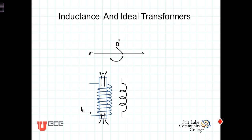In this video, we're going to go over the basics of inductance and ideal transformers. Any time a charged particle is moving, there's a magnetic field. A stationary charged particle has an electric field, but no magnetic field. The charged particle has to be moving in order for there to be a magnetic field associated with it. If you put your right-hand thumb in the direction of movement, your right-hand fingers will show the direction of the magnetic field.